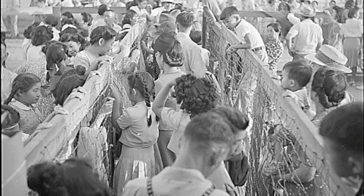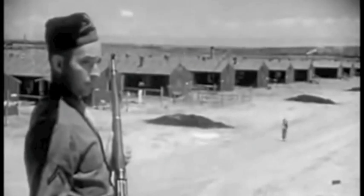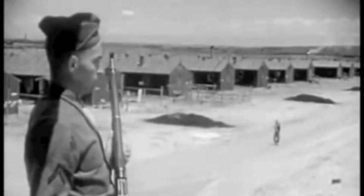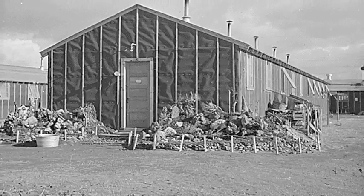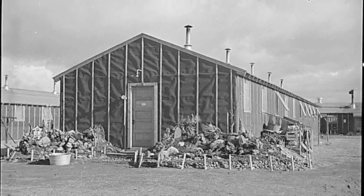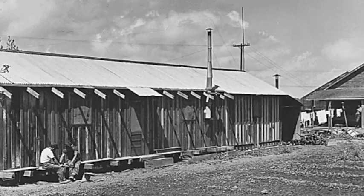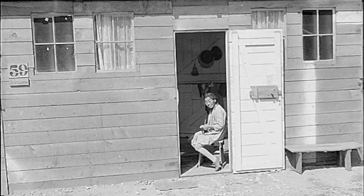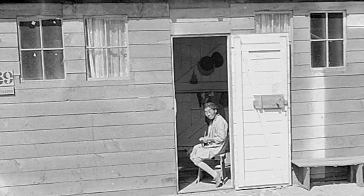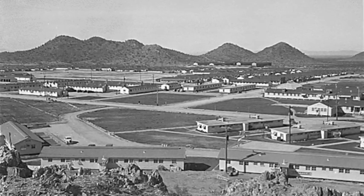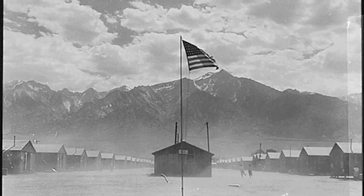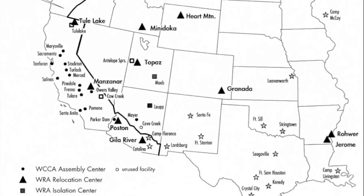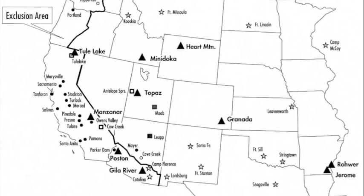Barbed wire fences surrounded the areas, and uniformed American soldiers with loaded guns patrolled the area. The architecture of the temporary housing couldn't keep up with the numerous amounts of people arriving at the centers. Many people had to live in horse stalls where the smell of manure lingered. After multiple months at the assembly centers, Japanese Americans were relocated to one of ten internment camps, also called detention camps, located in desolate areas in the U.S.